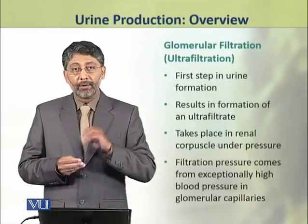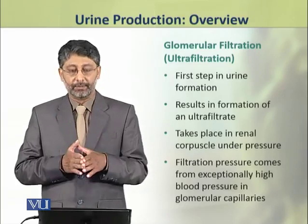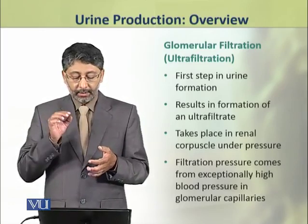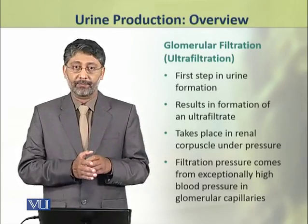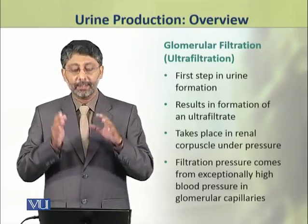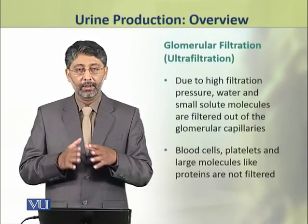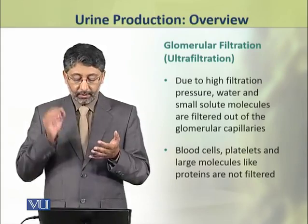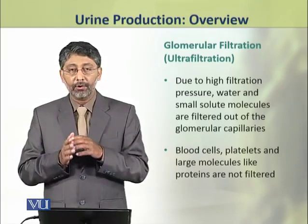Glomerular filtration, or ultrafiltration, is the first step in urine formation. It results in the formation of an ultrafiltrate. It takes place in the renal corpuscle under high pressure. The filtration pressure comes from exceptionally high blood pressure in the glomerular capillaries. Due to this high filtration pressure, water and small solute molecules are filtered out of the glomerular capillaries.